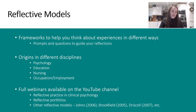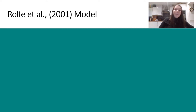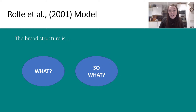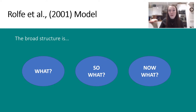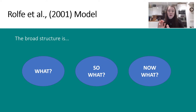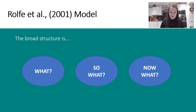The Rolfe et al. model's broad structure follows many other models — it uses the same three-part structure: What, So What, Now What. If you've watched our other videos, you'll know the Driscoll model uses this too. What's different about the Rolfe et al. model is that there are different sub-questions for each section. The What section has lots of different questions, as does the So What and Now What sections. This model was originally written regarding reflective practice in nursing, but it's really applicable to psychology and clinical experiences.